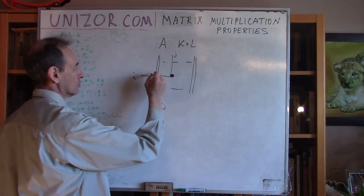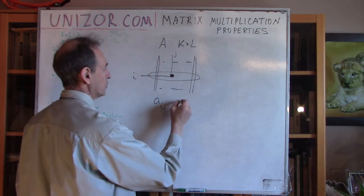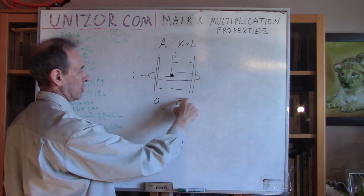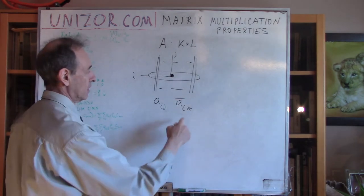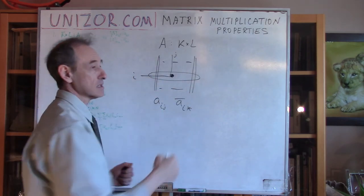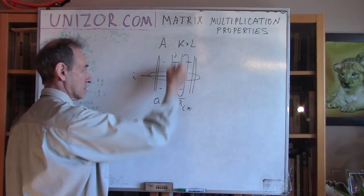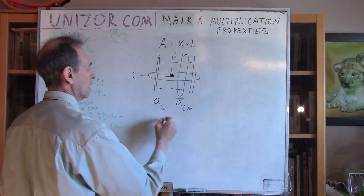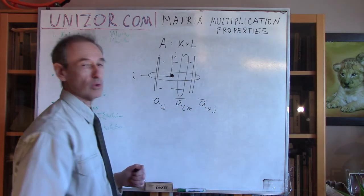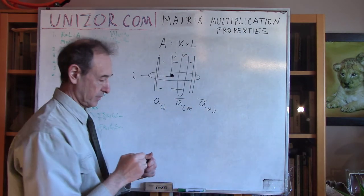Now if I would like to talk about the whole row, which is a row vector, I will use a bar on top to signify it's a vector. I is fixed because this is the i-th row and there's a star instead of a column index, which means everything in that row. If I would like to talk about the column vector in the matrix, I will use the second index equal to the column number and the first one would be a star, meaning everything in that particular column.